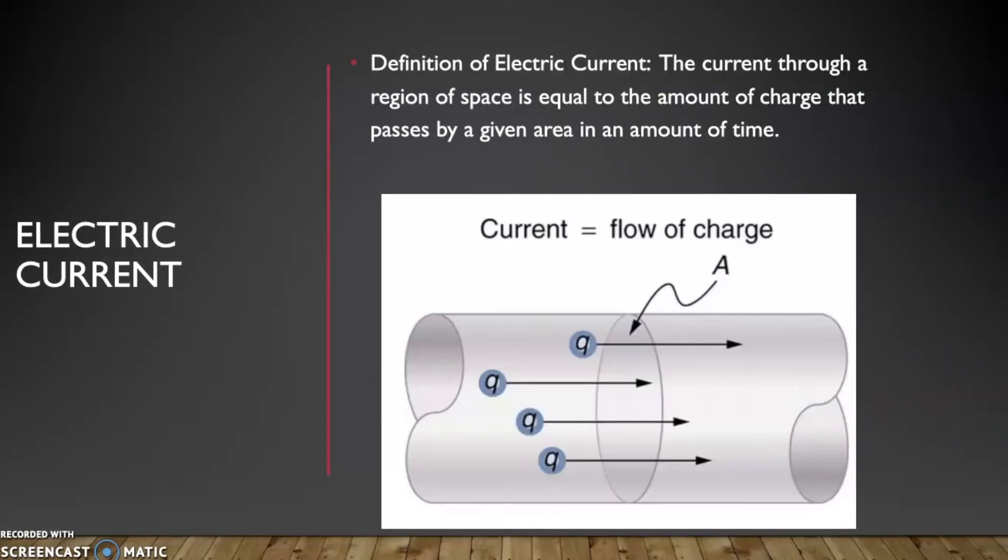The definition of electric current can be defined as the current through a region of space is equal to the amount of charge that passes by a given area in an amount of time. So current equals flow of charge, and we have A here which represents area.